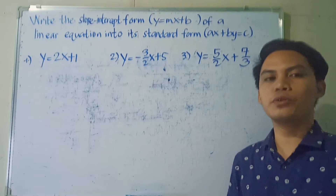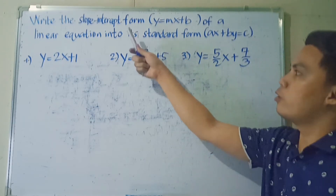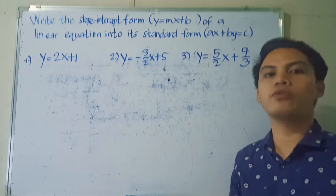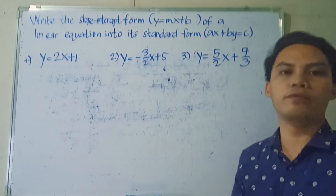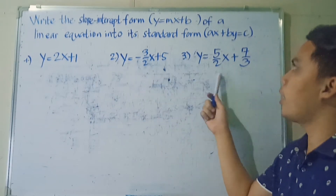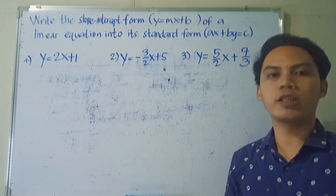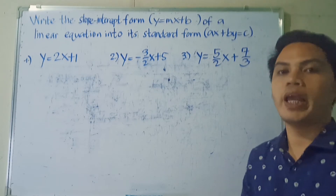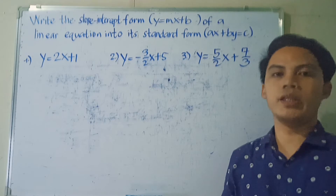This time, we're going to do the opposite. We are given the slope-intercept form of the linear equation, and we're going to transform that into its standard form. So our examples are already written as Y equals MX plus B, and we will rewrite them in the form AX plus BY is equal to C.